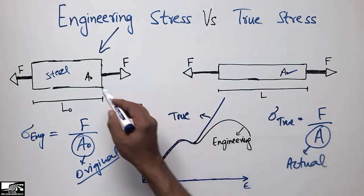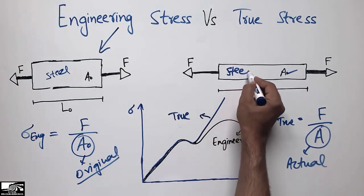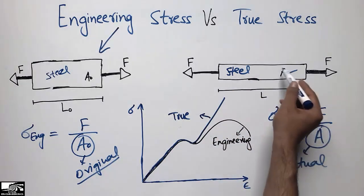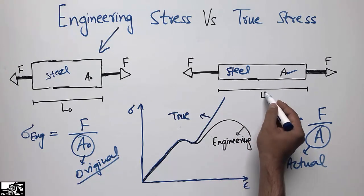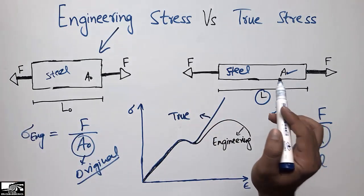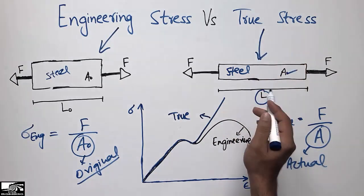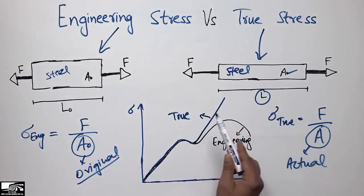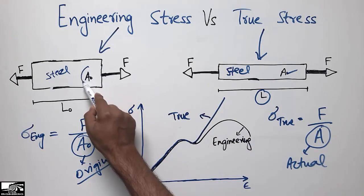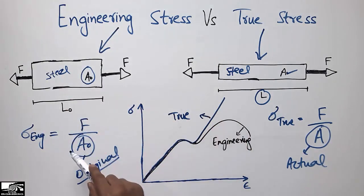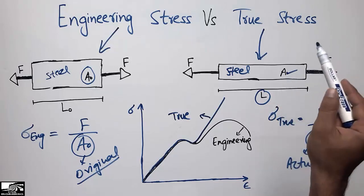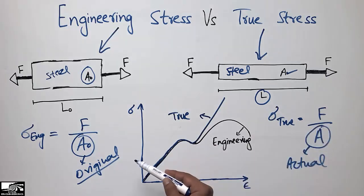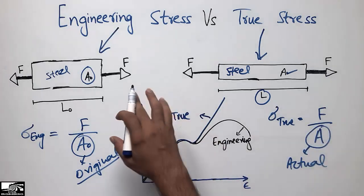Here we take the force divided by the actual reduced area of the object, and L is the elongated length. We call this the true stress because it gives us the true value of stress at each point. The main difference is that engineering stress uses the original area, while true stress uses the actual reduced area due to the applied forces.